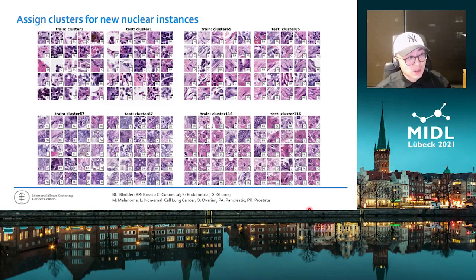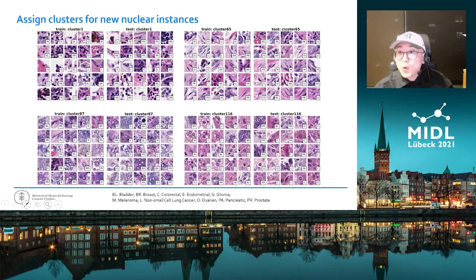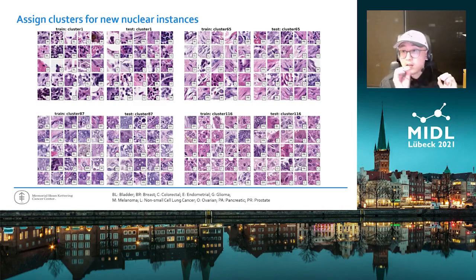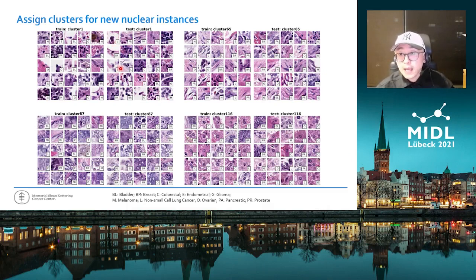Our method can also assign clusters for new nuclear instances. For any given new segmented or detected nuclear instance, we first extract its nuclear image, then apply the pre-trained Nuke2Vec model to compute its representation vector. We then find the 1,023 nearest neighbors among the one million nuclei used to train the Nuke2Vec model, and assign the cluster for this new instance by taking a majority vote of the clusters of those nearest neighbors. As you can see, for the test dataset, all nuclei are assigned to clusters bearing their particular morphological features as discovered from the training dataset.